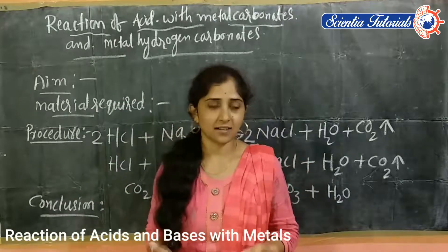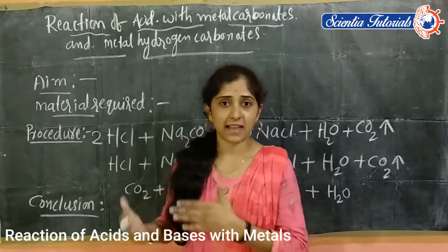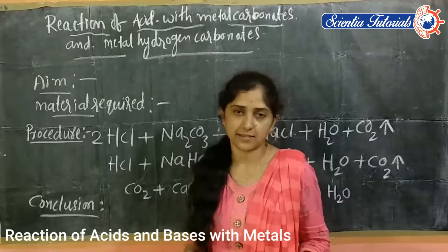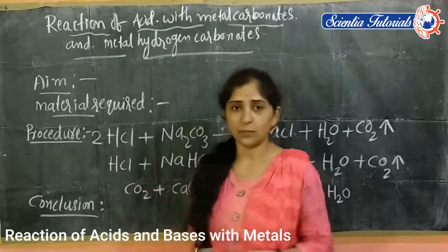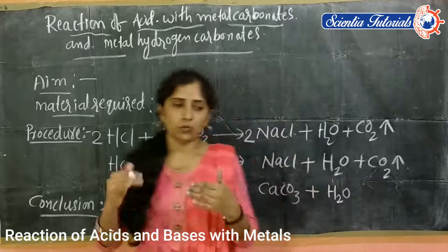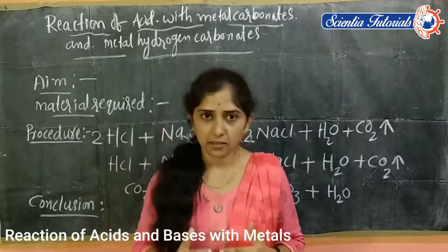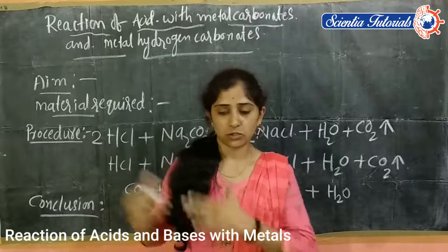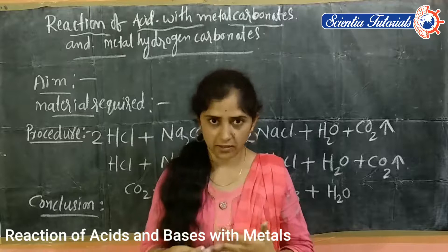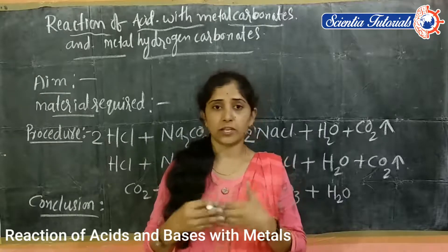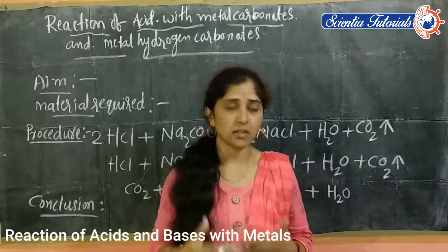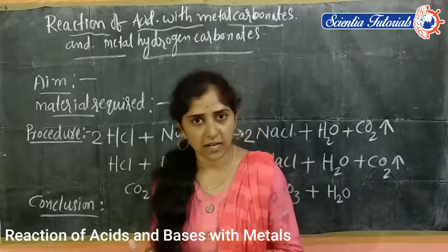The aim is to check what product is obtained when acid reacts with metal carbonates and metal hydrogen carbonates. For material required, we should take a retort stand and test tubes — 2 to 3 test tubes — sodium hydrogen carbonate, and sodium carbonate solution. These are salts. Sodium carbonate is a salt and sodium hydrogen carbonate is also a salt.